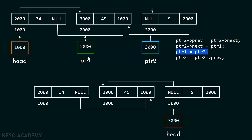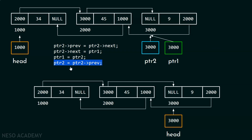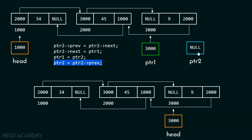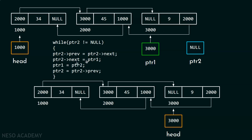After this, we update our pointers ptr1 and ptr2. We update ptr1 to point to the third node, and then update ptr2, which now becomes null since there are no more nodes. We know that ptr2 prev is null. When ptr2 becomes null, we should stop. So we will keep this code inside a while loop with the condition: if ptr2 is not equal to null, then we evaluate this code; else we exit the loop.